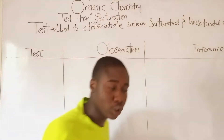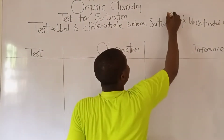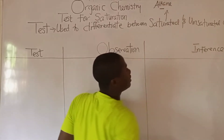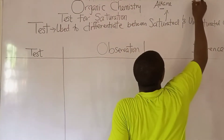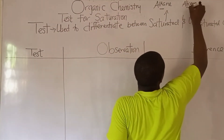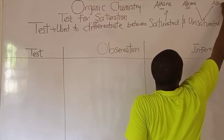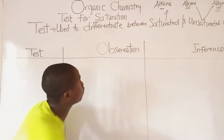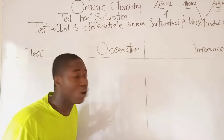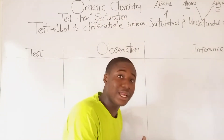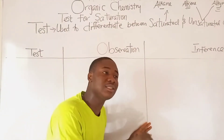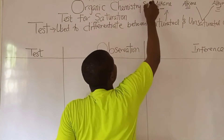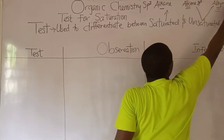The point about this test is: for saturated compounds, they are basically alkanes, and alkanes are single bonded. For unsaturated compounds, they can be alkenes, which are double bonded, and alkynes, which are triple bonded. Alkanes have sp3 hybridization, alkenes sp2, and alkynes sp.